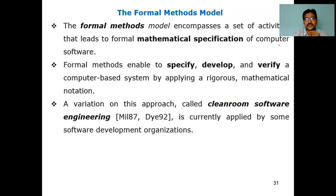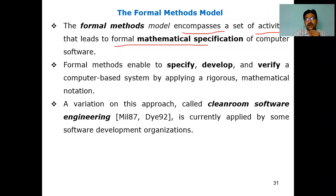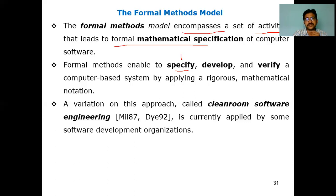The Formal Methods Model encompasses — meaning it combines — a set of activities. These activities lead to a formal mathematical specification of computer software. Formal methods enable you to: first, specify; second, develop; third, verify a computer-based system.